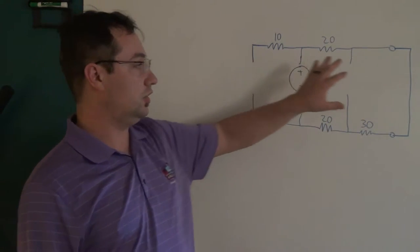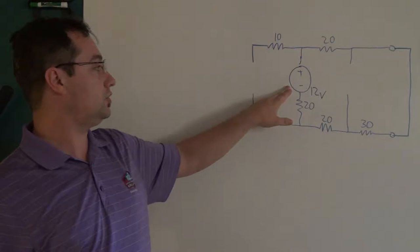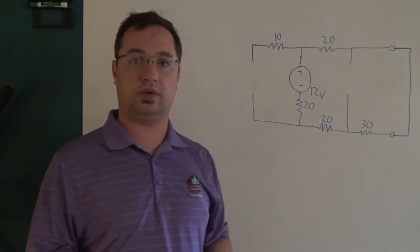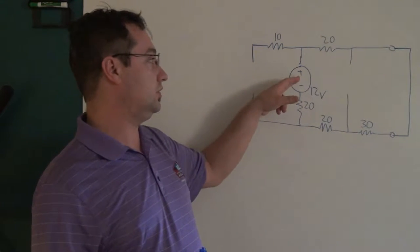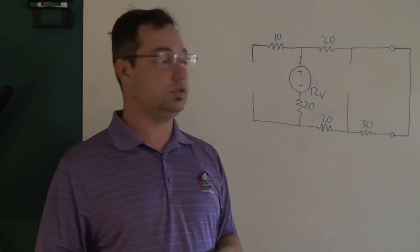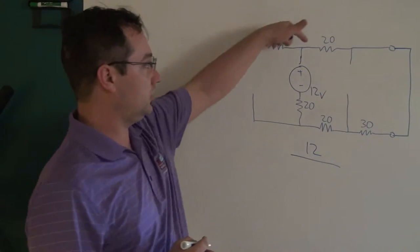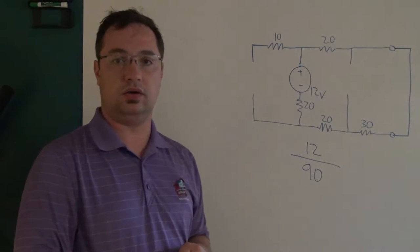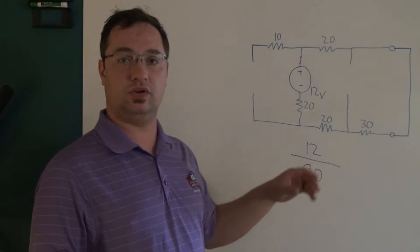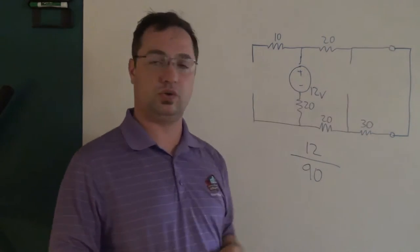Now we shut off the 4-amp source, turn on the 12-volt source, and do the same calculation. Very simply, what you have is a voltage source and a bunch of resistors in series. This looks like 12 over 90 — 20 + 20 + 20 + 30 = 90. Again, I want to leave this as a fraction to be precise, so the current through our short circuit is 12 over 90.